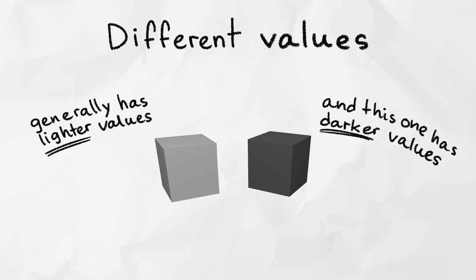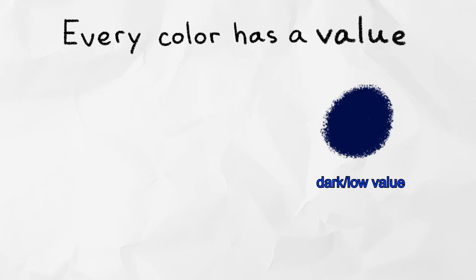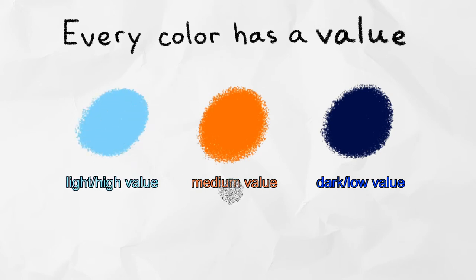In fact, every color has a value. Let's look at another example. This dark blue has a darker or lower value than this orange, and this light blue has a lighter or higher value than that same orange. Maybe you can see this right off the bat, but a good way to see which colors have a lighter or darker value is by simply applying a black and white filter.